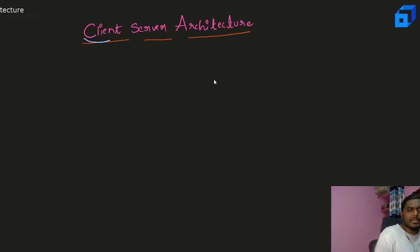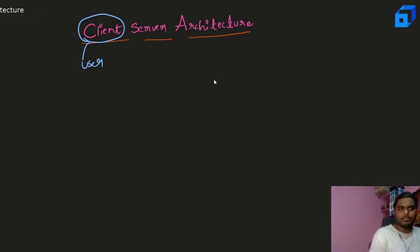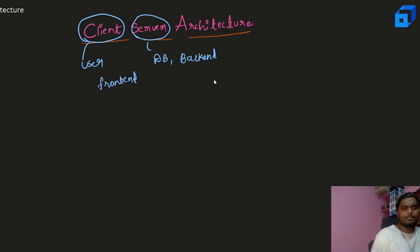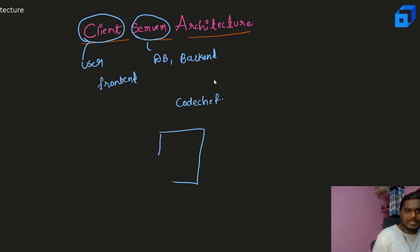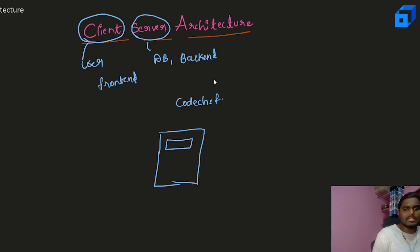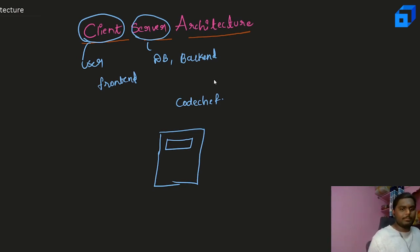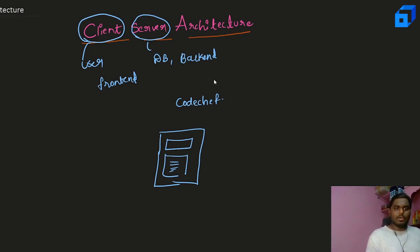First, let's look at the terminologies. A client is basically a user. Let's take the example of CodeChef. Say I have logged into CodeChef using my credentials and I want to search for a friend's username to see their ratings. I will provide their username and get all the details — their ratings, contest scores, and so on.